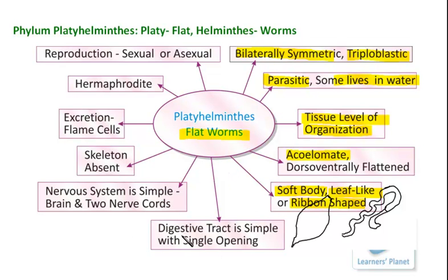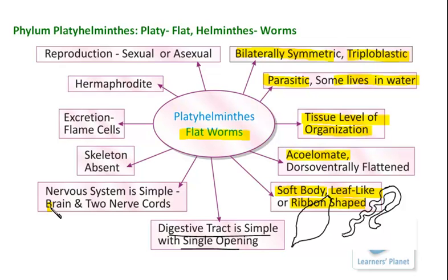The digestive tract is simple with a single opening. The alimentary canal development has started here, but there is only one opening — meaning mouth and anus are common; separate openings for ingestion and ejection are not present. The nervous system is also very simple, comprised of a very small brain and two nerve cords. The organism's body has no skeleton — both endoskeleton and exoskeleton are absent.